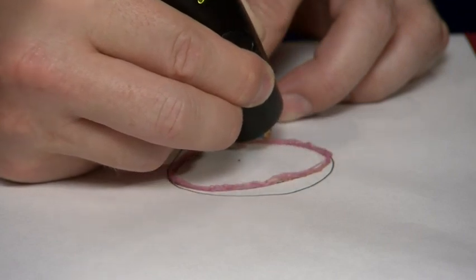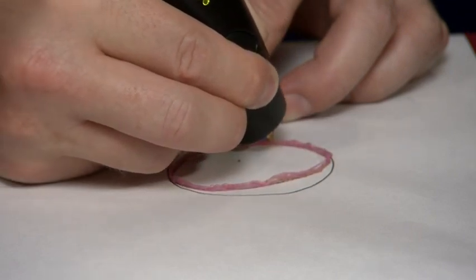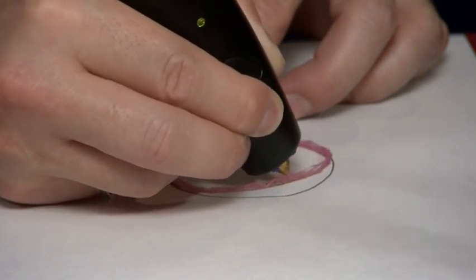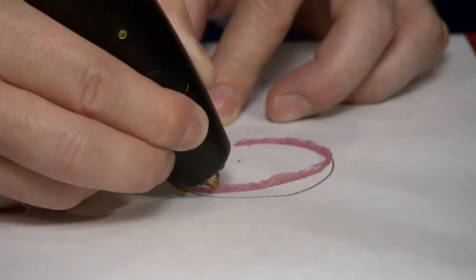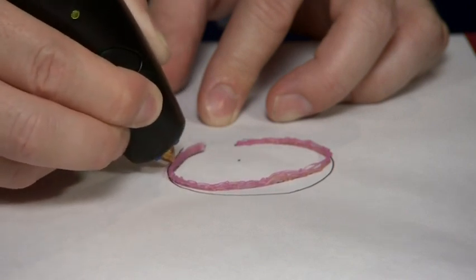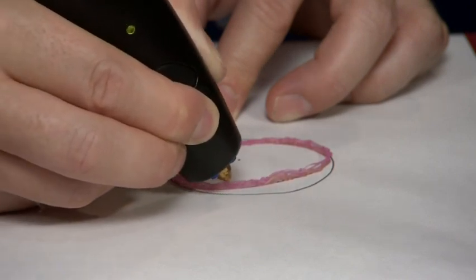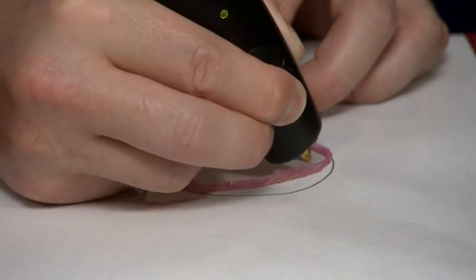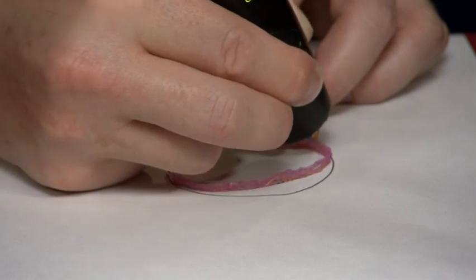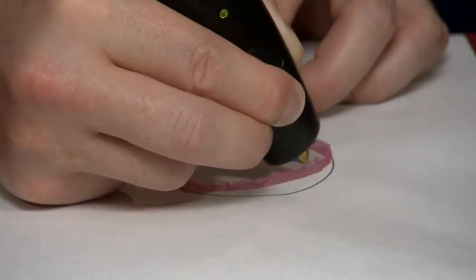As you can see, I'm laying down these strands of plastic. Each one is about a millimeter thick, and they go over each other. The plastic comes hot out of the nozzle, and it's still sticky when it comes out, and that means it will bond to plastic that I've already laid down. That means it's fairly easy to build up these layers and make a 3D object out of something you've just sketched on paper.